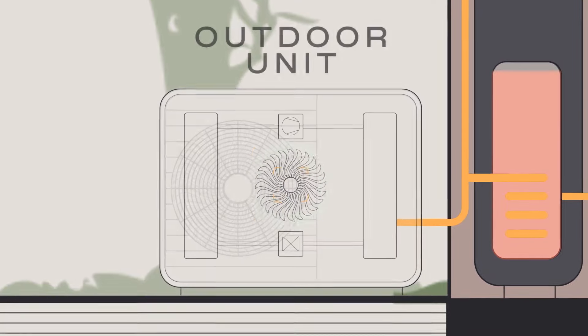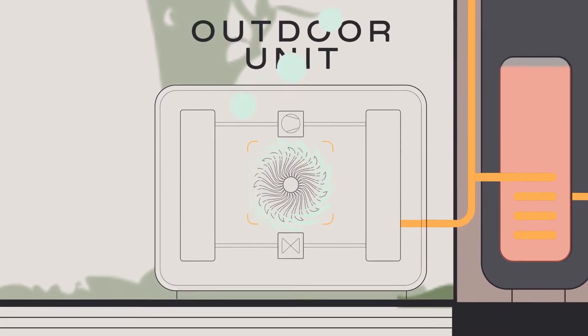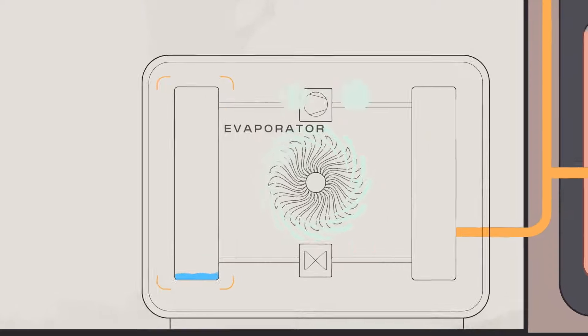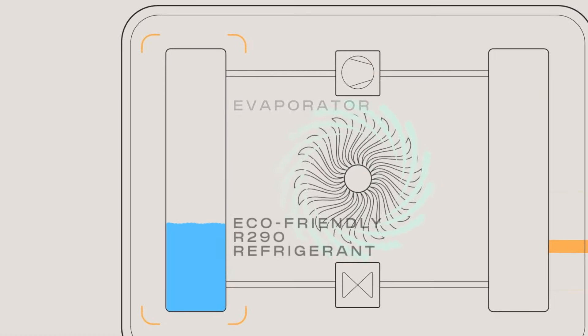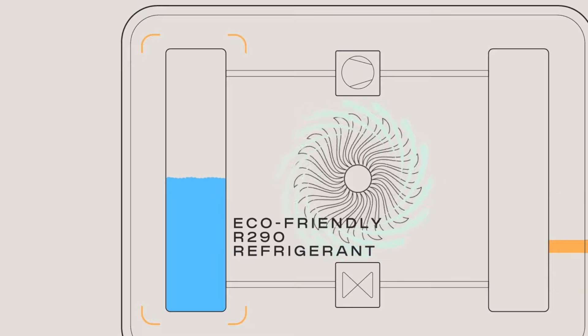It starts by the fan drawing the free outside air into the heat pump, through the evaporator, where a special liquid, called a refrigerant, is used to absorb the thermal energy.